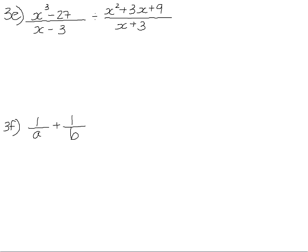Question 3e, before we can divide these two fractions, we need to fully factorize all the numerators and denominators. x cubed minus 27 is the difference of cubes. So the signs will be the same, opposite and always positive.